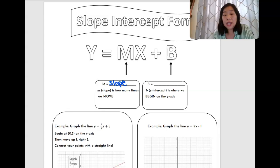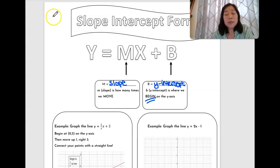Okay, b is going to be our y intercept and this is going to stand for where we begin. B for begin. Okay, so what does that mean?